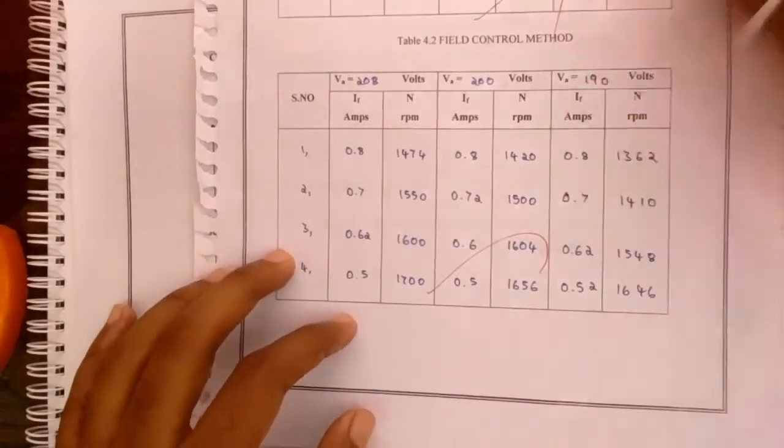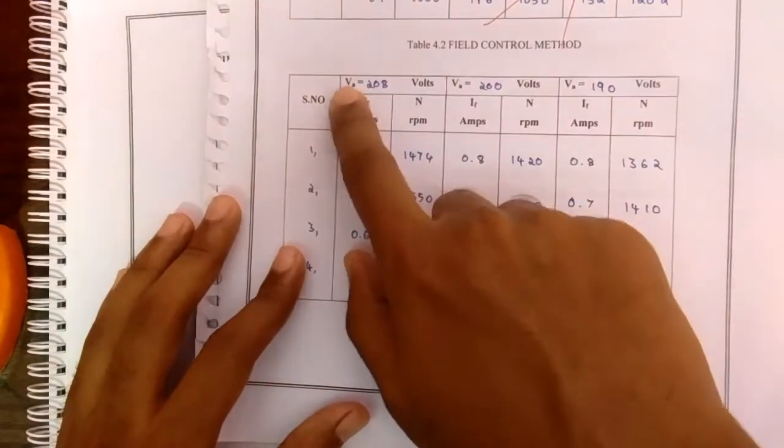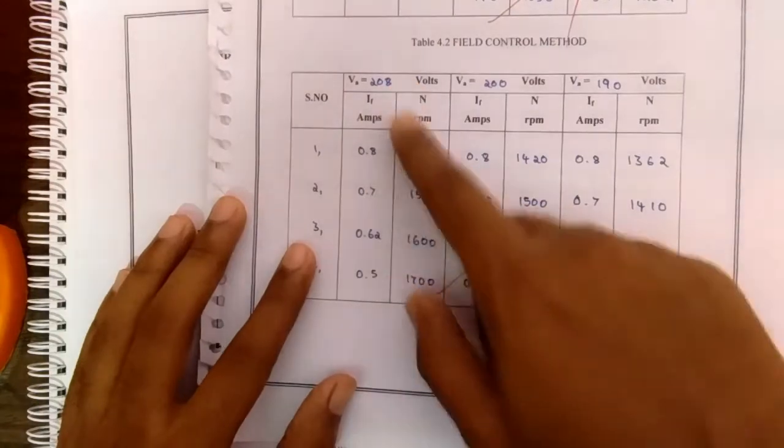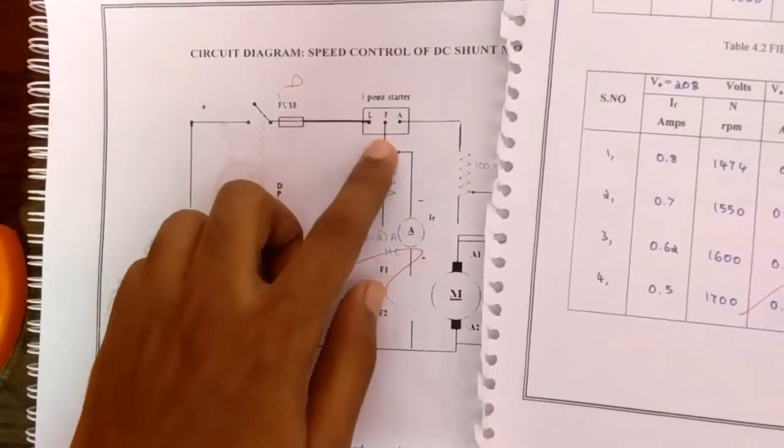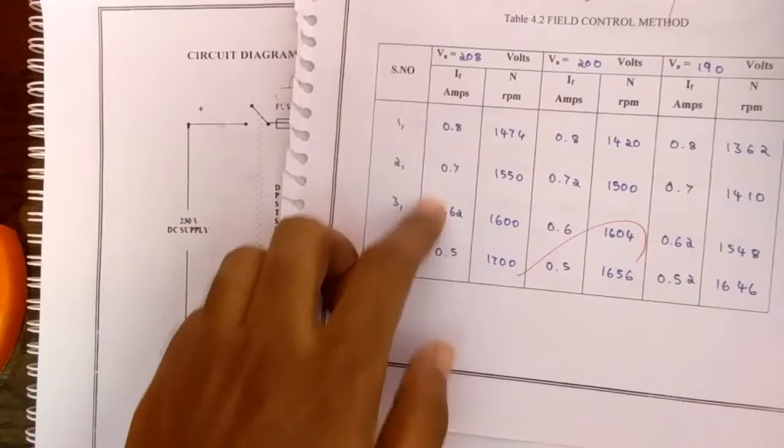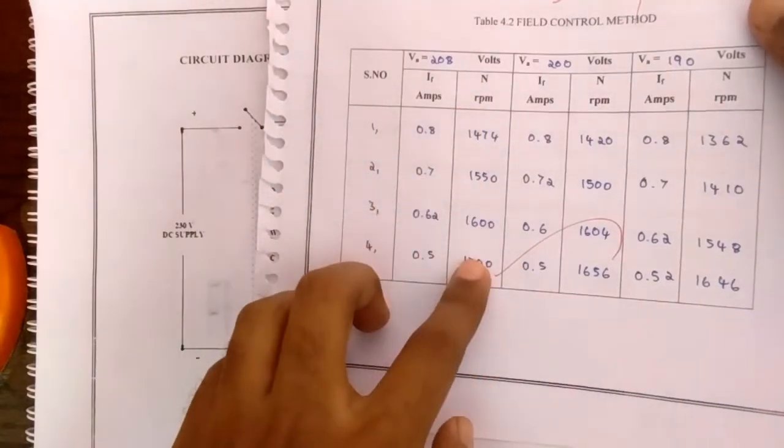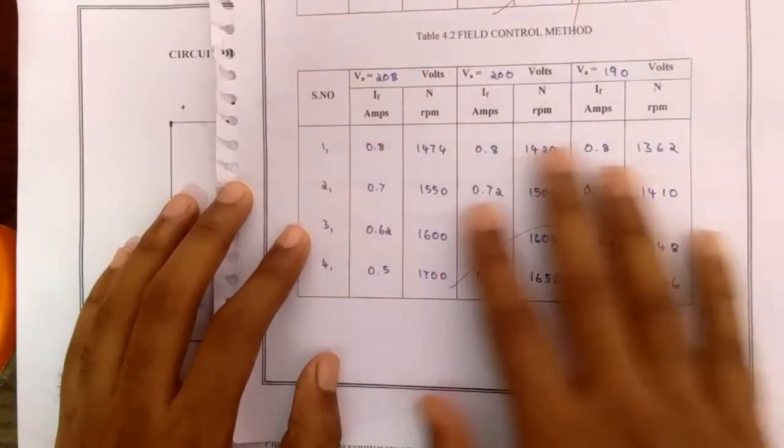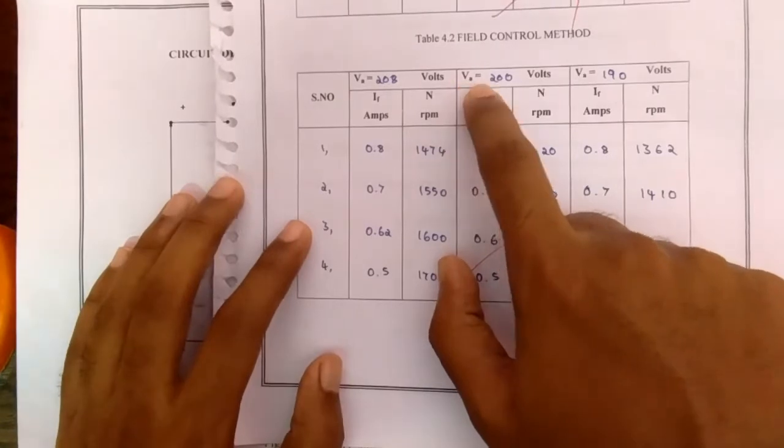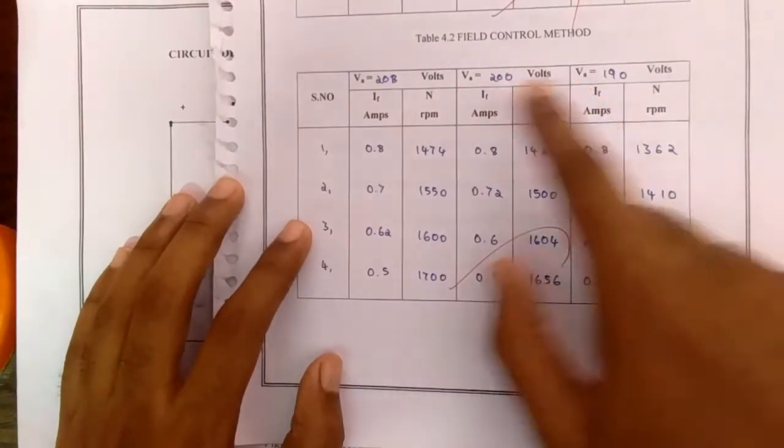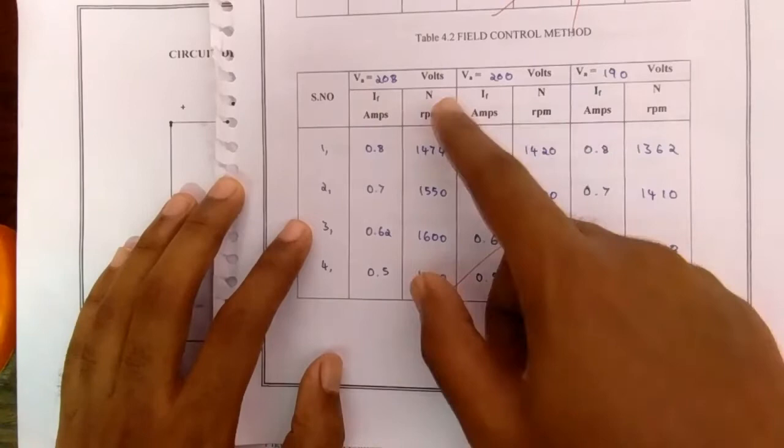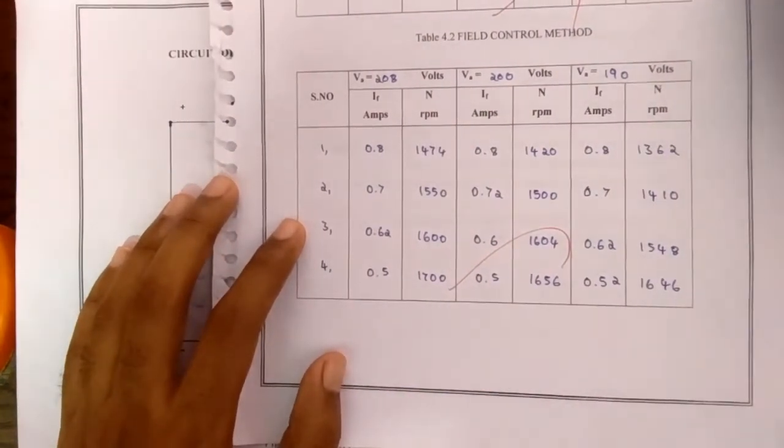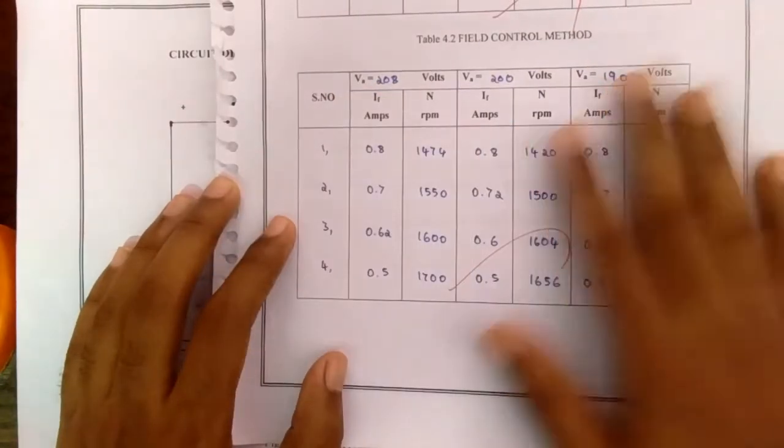For field control method I have just made VA equal to 208 volts, and with the corresponding voltage I have just increased the rheostat value and then I have taken IF. So like this you can take two or more readings with varying the VA in corresponding like 10 or 5 volts. So this is for the field control method.